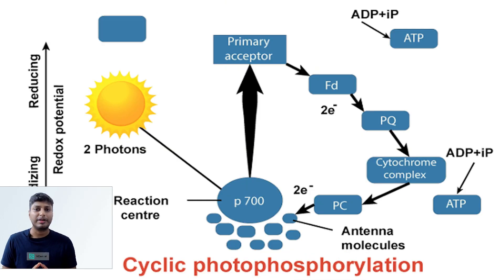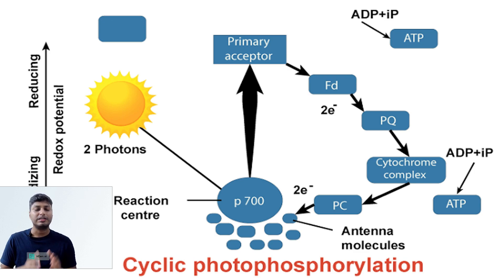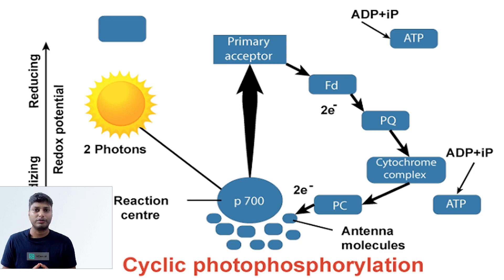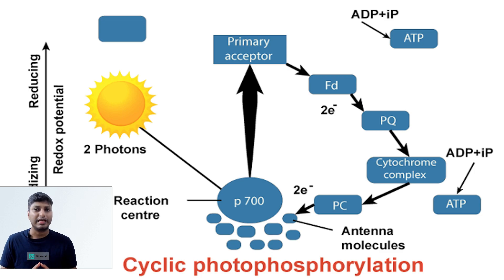The light reaction comprises two major pathways: one is called cyclic photophosphorylation and the other is called non-cyclic photophosphorylation. Let us understand what cyclic photophosphorylation is.